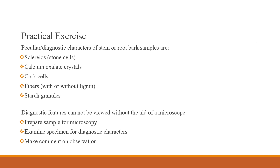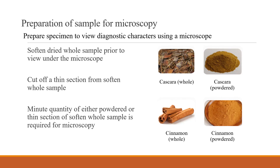These diagnostic features can only be viewed using a microscope by first preparing the specimen. This is followed by examining the various microscopic characters seen under the microscope, and then it is expected to make comments on what you have observed. When given a dried whole form of specimen, the specimen is initially softened by soaking in water for a few minutes, and a thin section of the softened sample is cut off. A minute quantity of either powdered or thin section of the softened whole sample is what is required for microscopy.